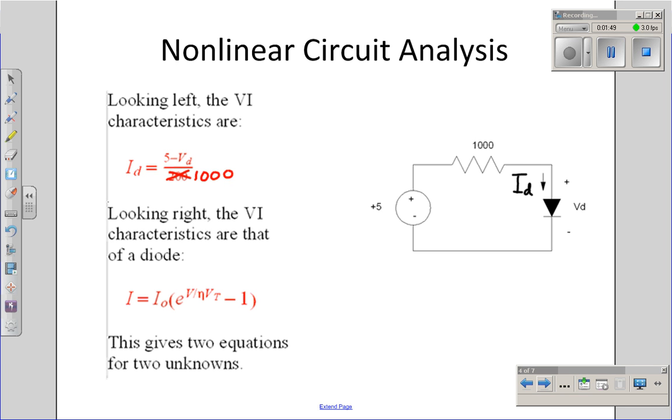One way to do that is take the circuit and split it. Looking left, the voltage and current are related by the 5-volt source and 1,000-ohm resistor. The current that I draw is going to be 5 volts minus the volts across the diode, whatever that is, divided by 1,000 ohms. That gives me the current through the resistor, which is I sub d.